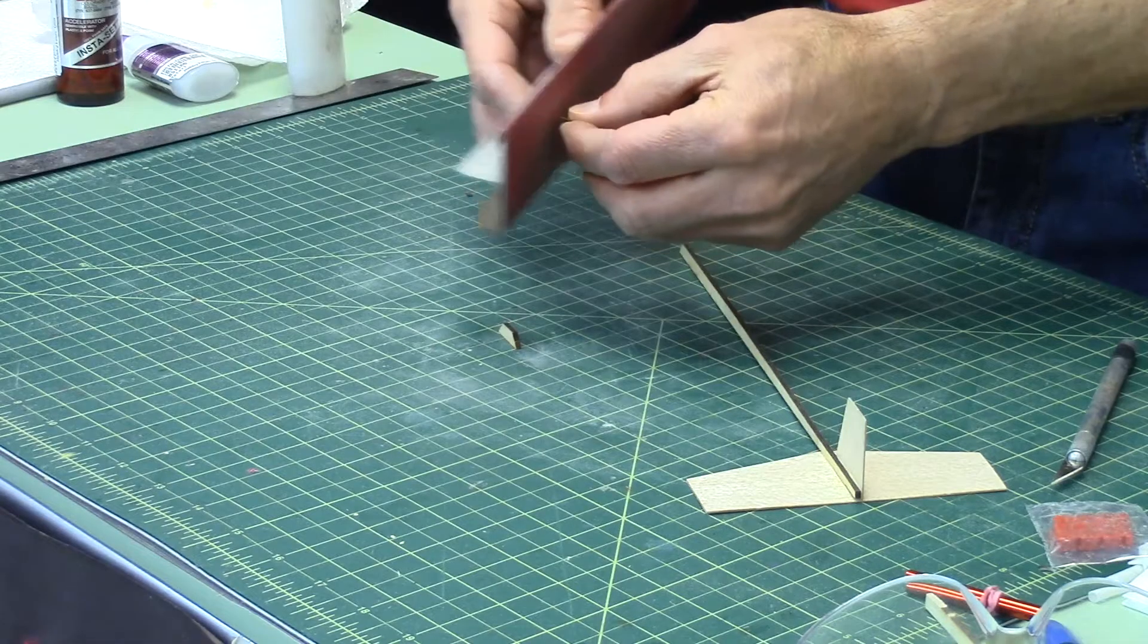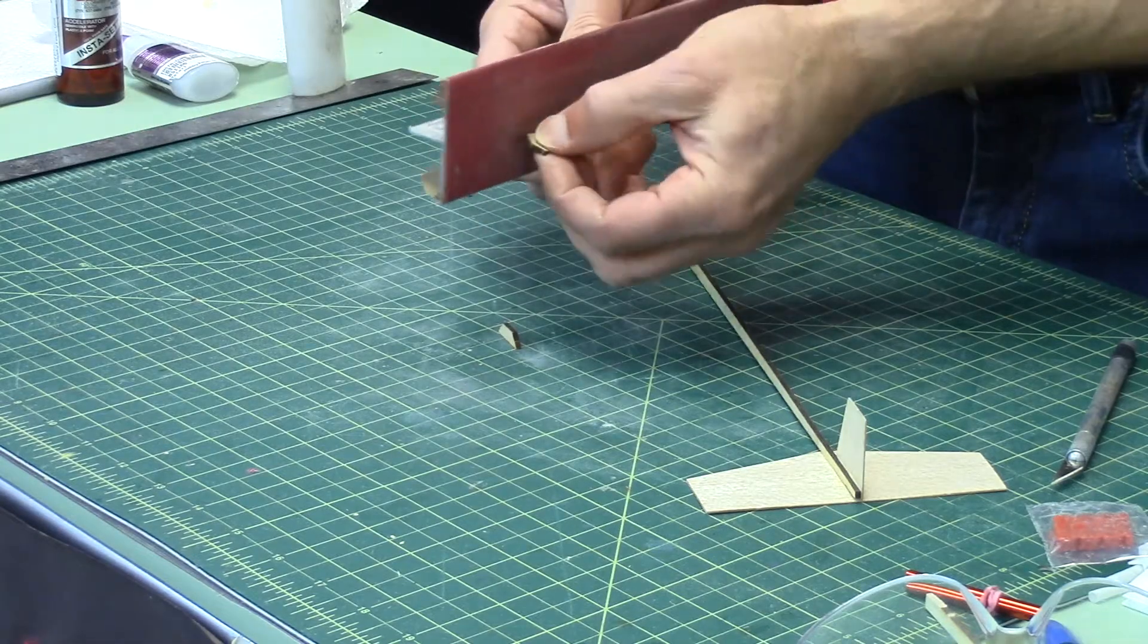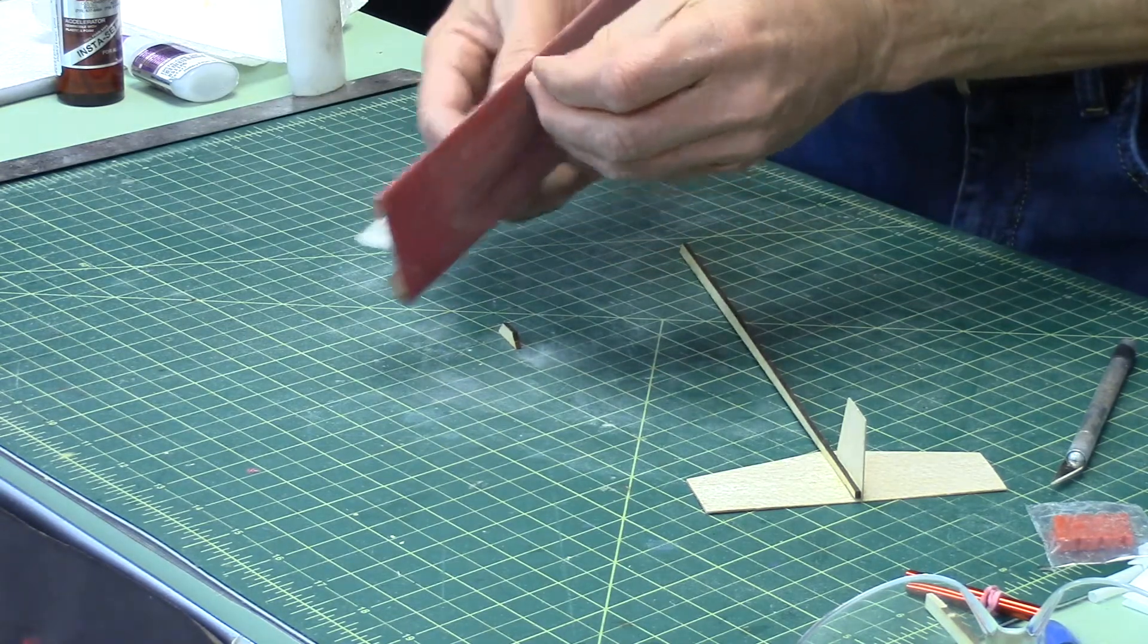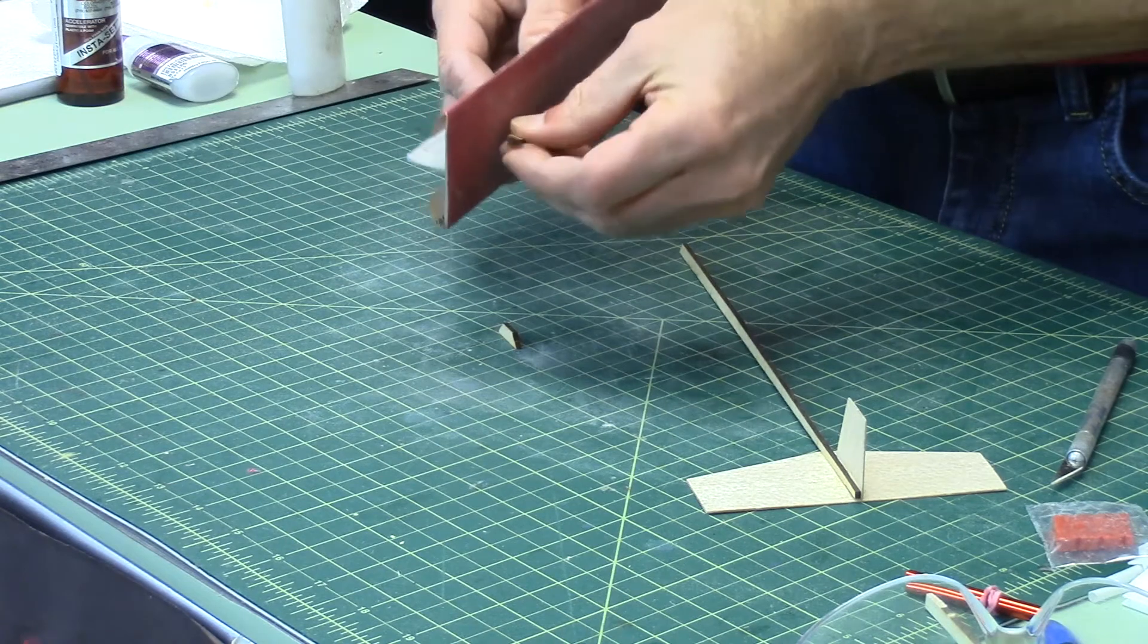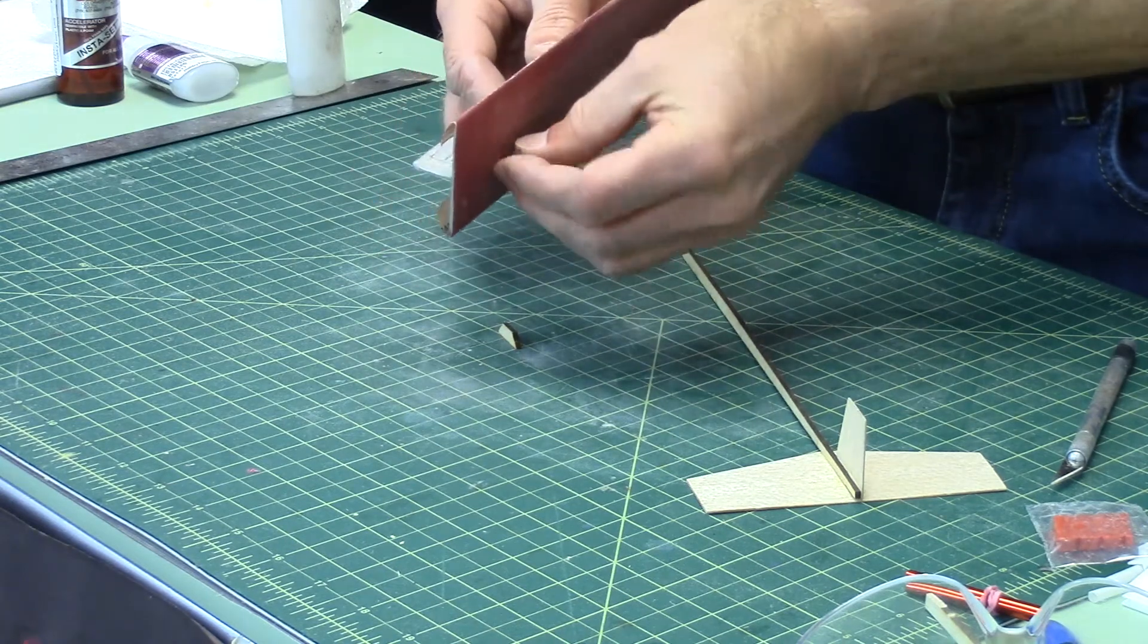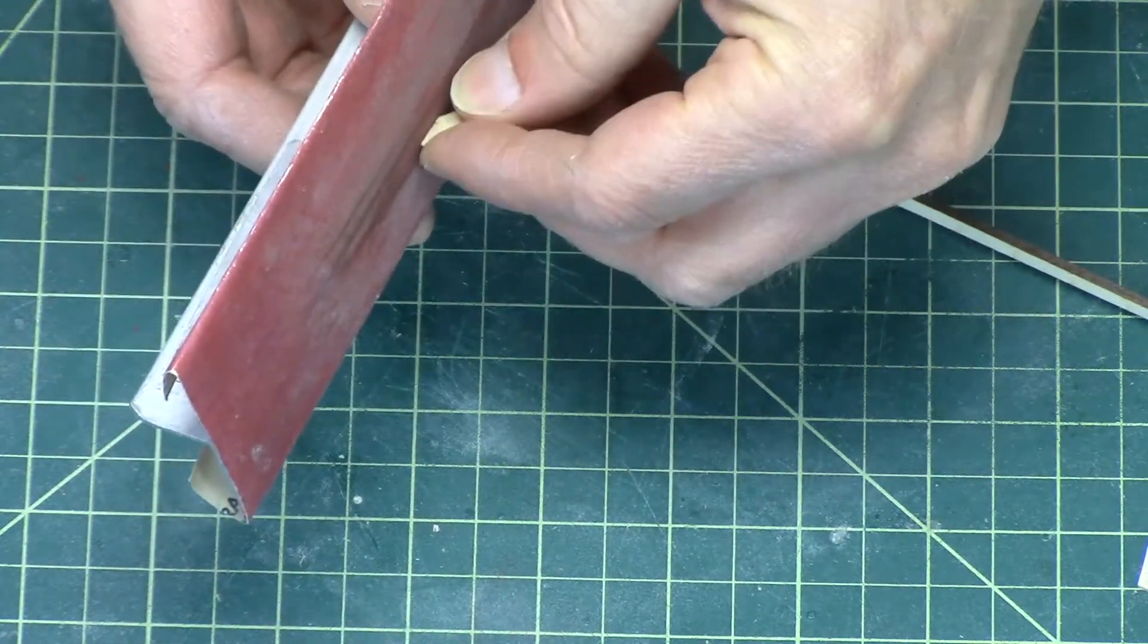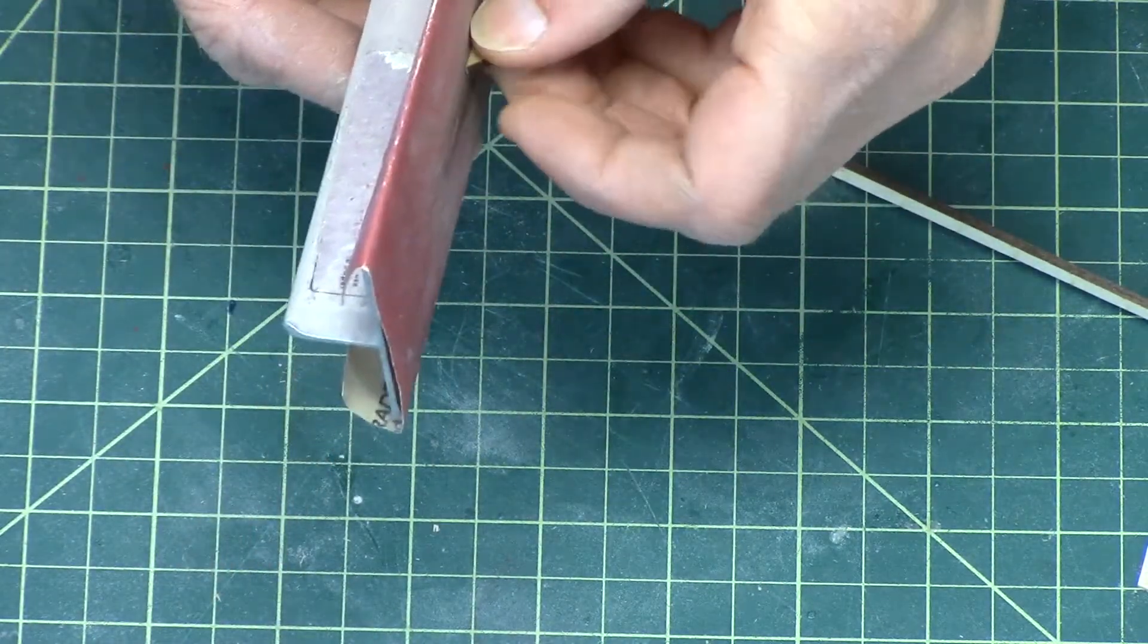Before I do that, I'm just going to gently sand the edges, knock off any little glue tabs that were stuck to it. I'm using very light pressure here. It's not taking much at all.